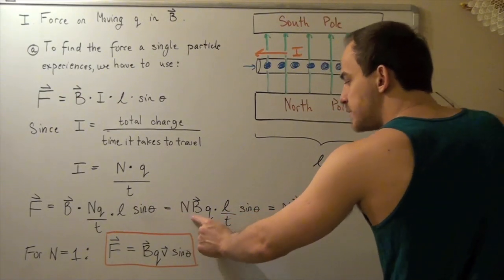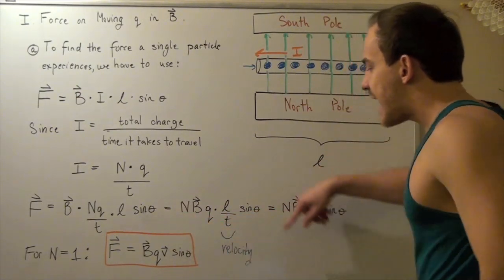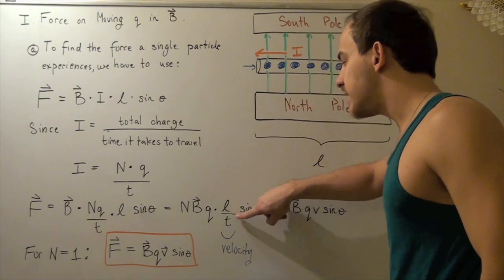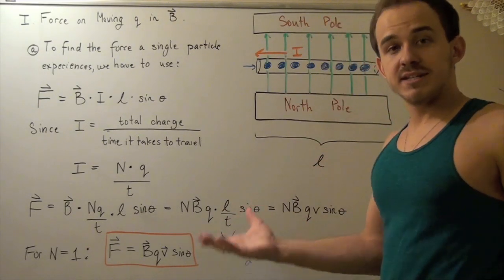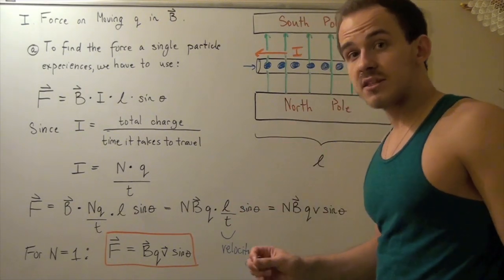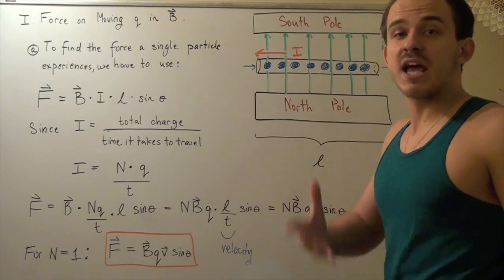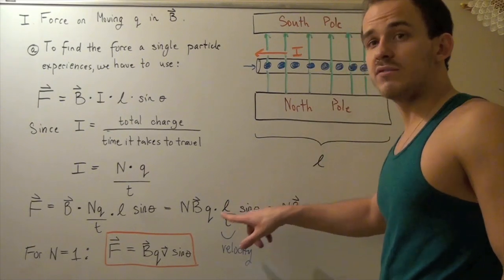And now, notice I have L divided by T. What's L divided by T? Well, that's simply velocity. Velocity has units meters per second. That's exactly what L divided by T is.